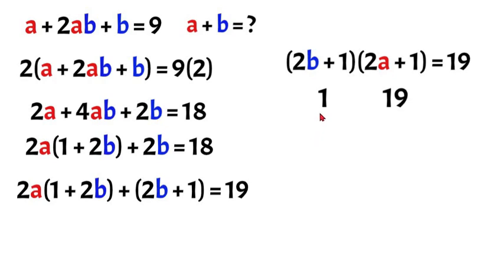So when the factors are 1 and 19 we now are going to set 2b plus 1 equal to 1 and 2a plus 1 equal to 19 to solve for a and b.